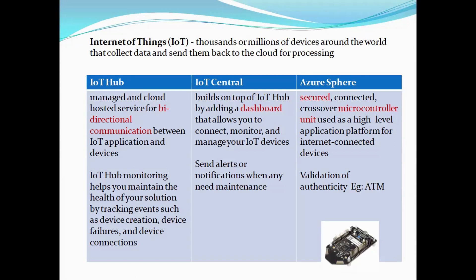For example, in IoT Hub or Central, managing a refrigerator or changing its temperature can be done using Hub or Central. But Azure Sphere is a more secured solution — for example, protecting authenticity in an ATM. That kind of secured feature comes under Azure Sphere. These are the three different types under IoT.